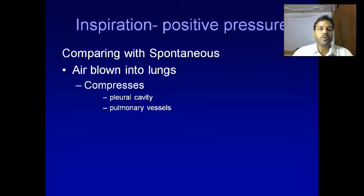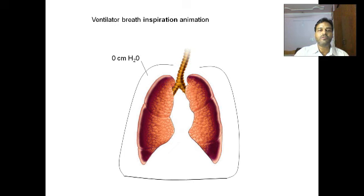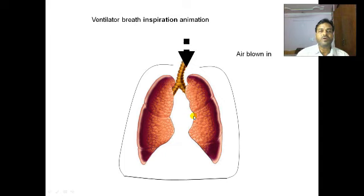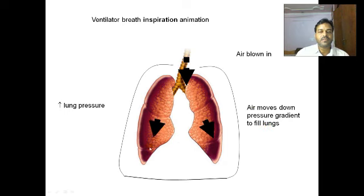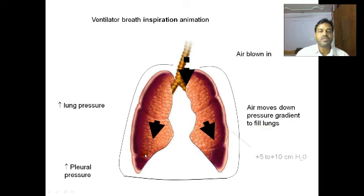During inspiration with positive pressure ventilation, compared with spontaneous breathing, air is blown into the lungs which compresses the pleural cavity and the pulmonary vessels. In the ventilator breath inspiration animation, when air is blown into the lungs, it increases the lung pressure, air moves down the pressure gradient to fill the lungs, and the lung expands, which increases the intrapleural pressure.